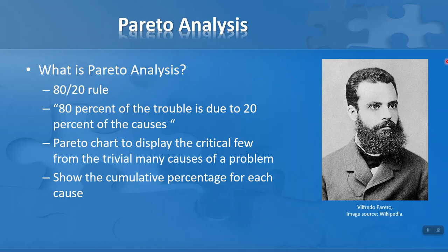This leads us to the concept that 80% of the trouble is due to 20% of the causes. So if we have a lot of difficulties or a lot of problems, perhaps the Pareto principle applies, and therefore we need to know what that 20% of causes are. We want to ignore the 80% and focus on the 20%. We can use a Pareto chart to display what we call the critical few from the trivial many causes of a problem — we need to know those critical few so that we can prioritise them for solutions. The Pareto chart then shows us the cumulative percentage for each cause.